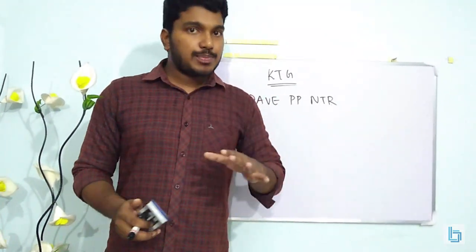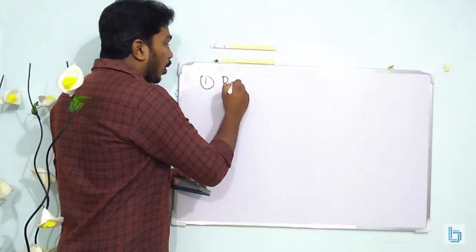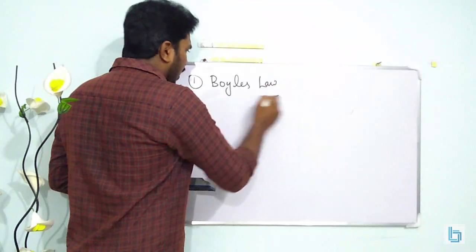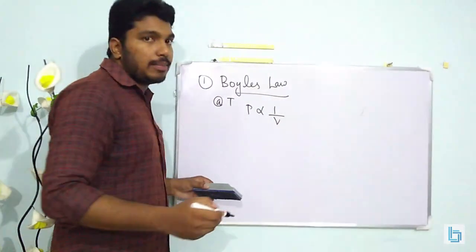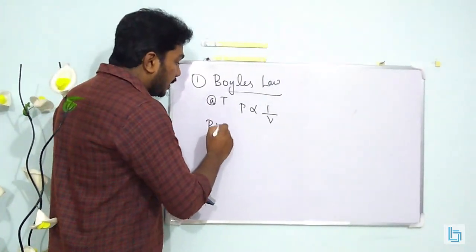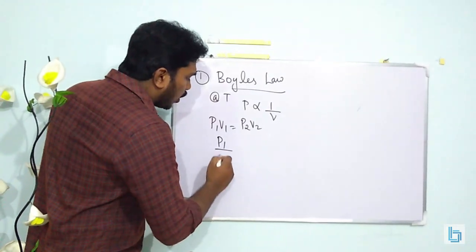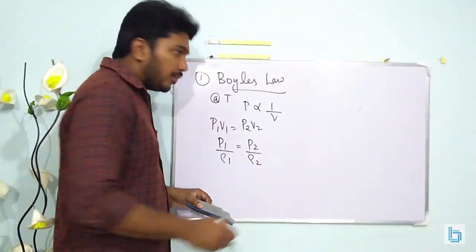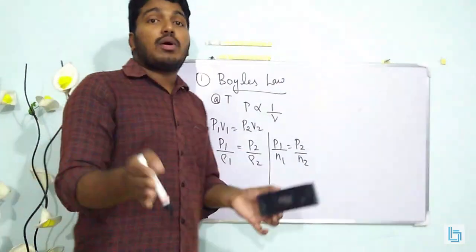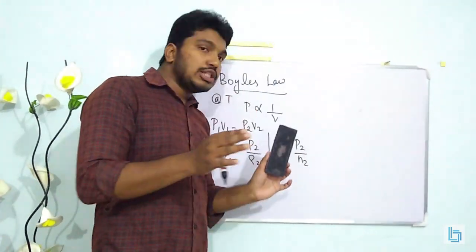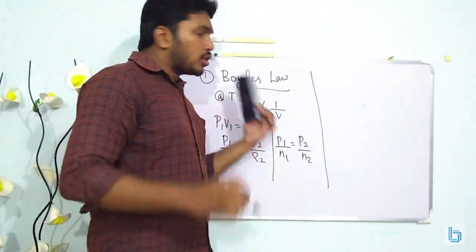Now let's move on to the gas laws. The first gas law is Boyle's law. Based on Boyle's law, at constant temperature, pressure is inversely proportional to volume. We can write P1V1 = P2V2. Since volume = mass/density, we can also write P1/ρ1 = P2/ρ2. We can also write P1/N1 = P2/N2, where N1 and N2are the number of molecules per unit volume.